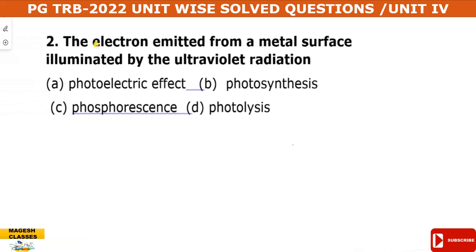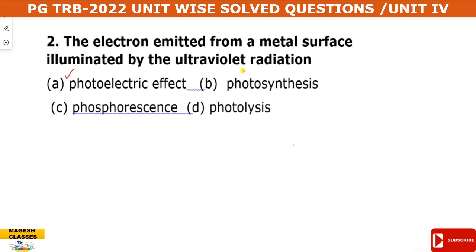Next question: electrons are emitted from a metal surface when illuminated by ultraviolet radiation. This is the direct definition of the photoelectric effect. A metal surface is irradiated with ultraviolet radiation and electrons are ejected — this is the photoelectric effect.